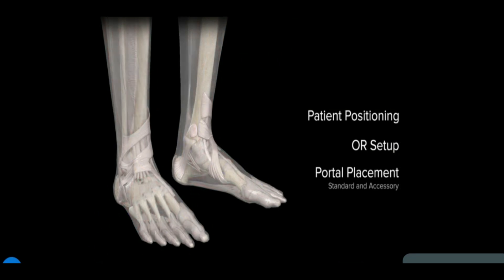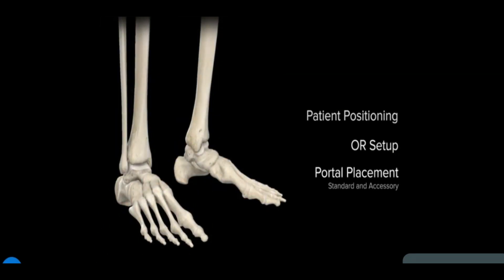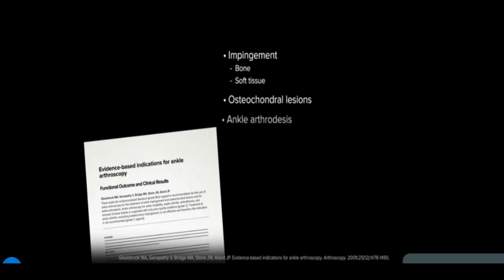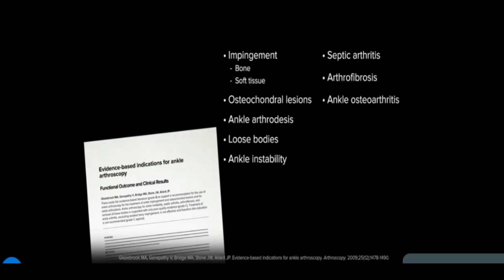Glazebrook and colleagues performed a comprehensive review of the literature for indications for ankle arthroscopy. These include, but are not limited to: impingement (both bony and soft tissue), osteochondral lesions, ankle arthrodesis, loose bodies, ankle instability, septic arthritis, arthrofibrosis, ankle osteoarthritis, synovitis, and fractures. They assessed levels of evidence and made recommendations based on this review.